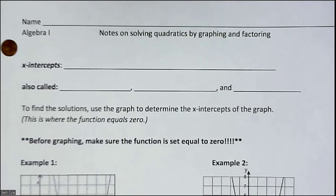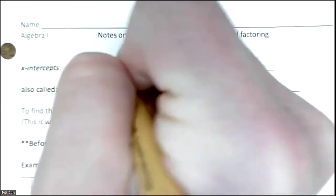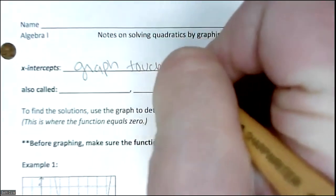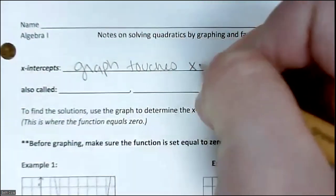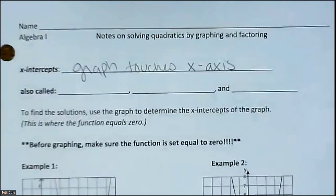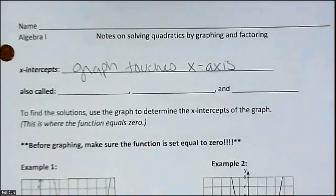Whenever you solve these, what you're actually finding are the x-intercepts, and that's where the graph touches the x-axis. We just reviewed that on your warm-up. Oftentimes there are two of them. Sometimes there's only one. Sometimes you could have none — that would be a no solution. But usually there's going to be two, where the graph touches the x-axis.